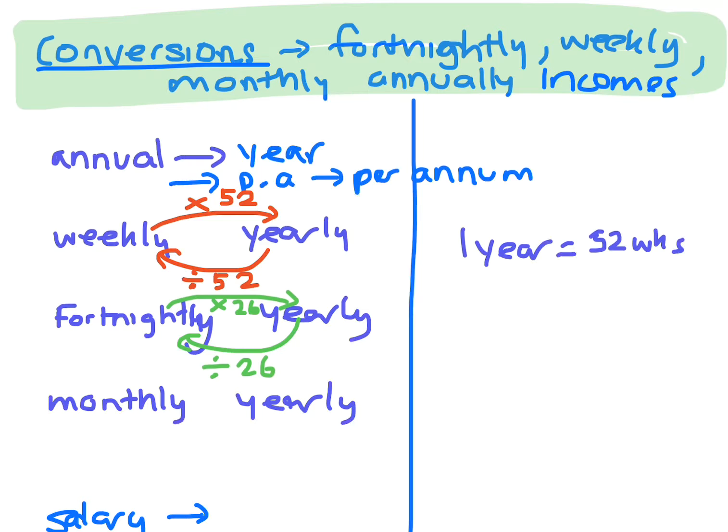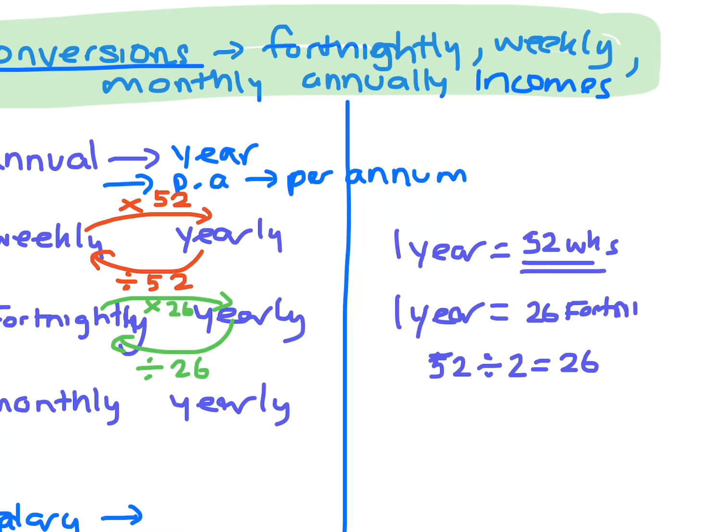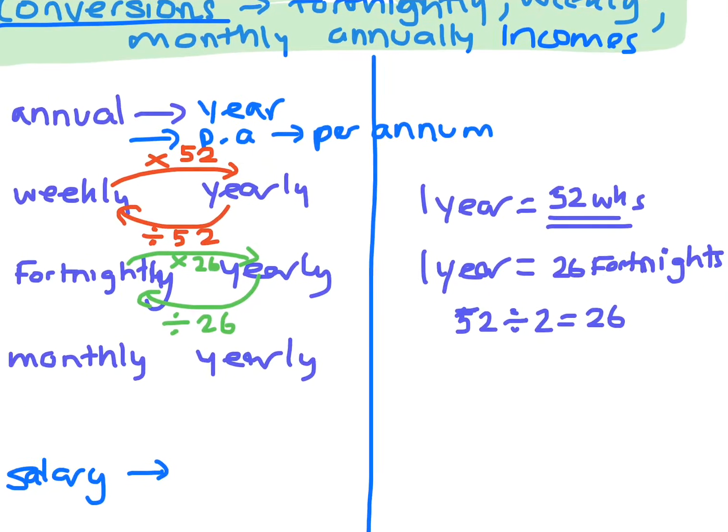Because there are 26 fortnights in a year. Why 26? Because if you do 52 divided by 2, since there are two weeks in a fortnight, you get 26. So there are 26 fortnights in one year.